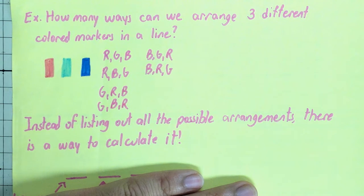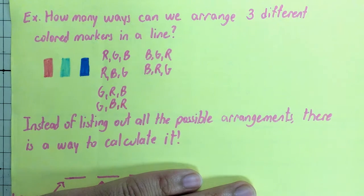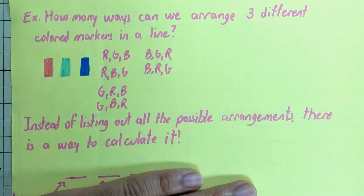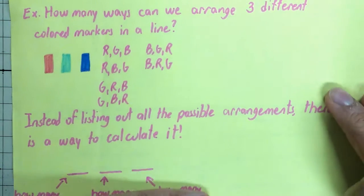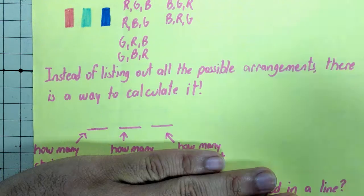Because what if instead of three, you had five different markers? Then your list gets bigger and bigger. So there is a way to calculate this by looking at it this way.